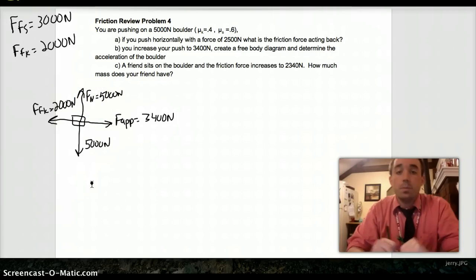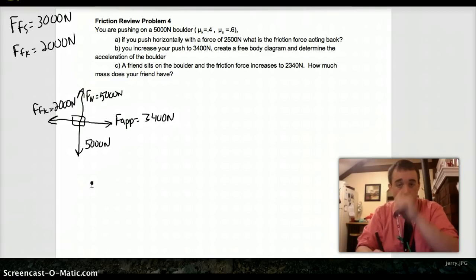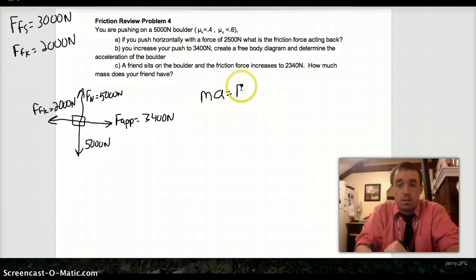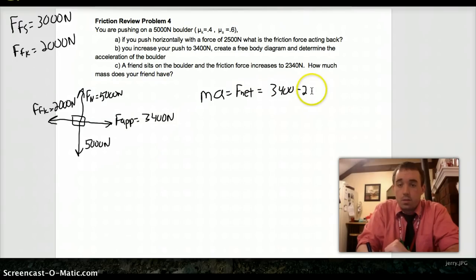Okay. So, we have to figure out our acceleration. Well, our acceleration is based on Newton's second law. Our net force, the verticals cancel. So, we only have 3,400 minus 2,000, which is 1,400.